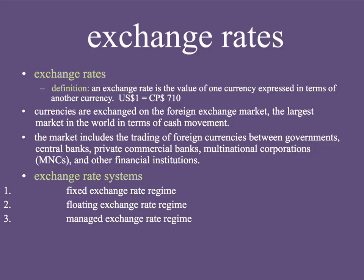Clearly, an exchange rate — we need a definition — is the value of one currency expressed in terms of another currency. So $1 equals 710 pesos. Currencies are exchanged on the foreign exchange market, which is the largest market in the world in terms of cash involvement. That shouldn't be too shocking, because everything changing hands is cash — you're not changing wheat and dollars, you're changing pesos for dollars, so the entire transaction is essentially doubled by the value of the cash.